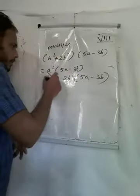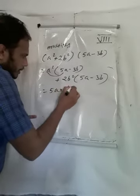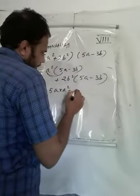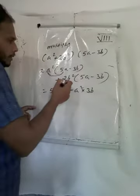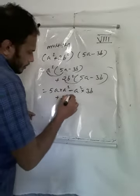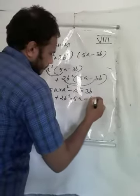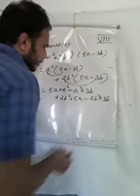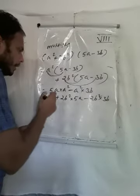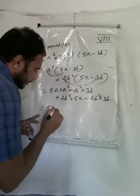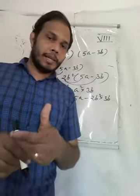You need to multiply each term: a squared into 5a, minus a squared into 3b, plus 2b squared into 5a, minus 2b squared into 3b. Multiply each term with every term in the other expression.